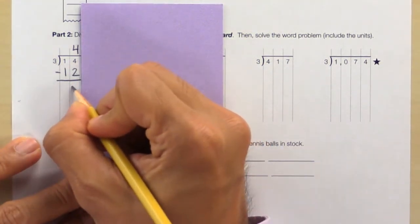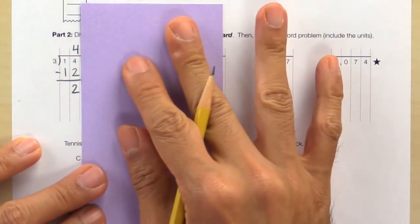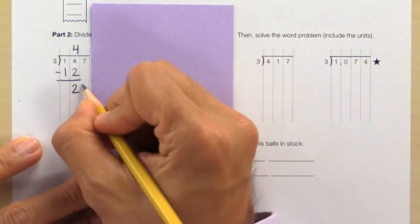14 minus 12 is 2. Slide over, bring down the 7.